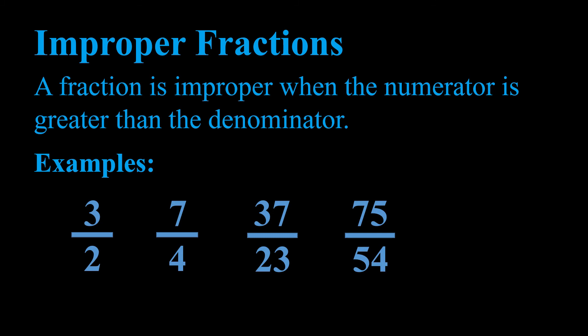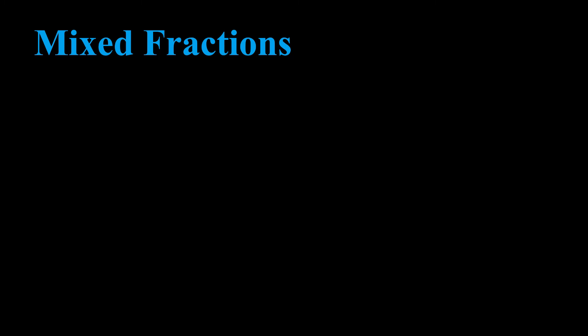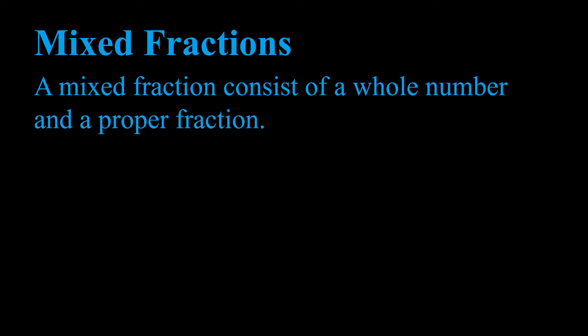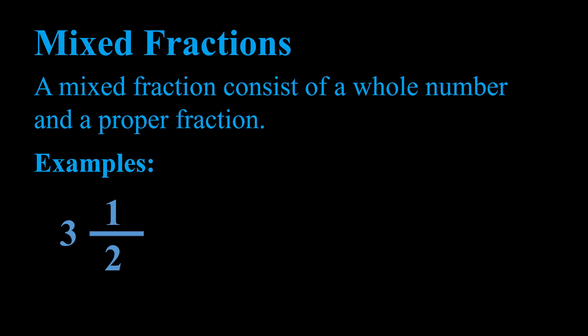Now let's look at mixed fractions, the final type we'll cover. A mixed fraction consists of a whole number and a proper fraction. Our first example is three and a half. We have the whole number three, and the proper fraction one half, written as one divided by two. A fraction is proper when the numerator is smaller than the denominator.